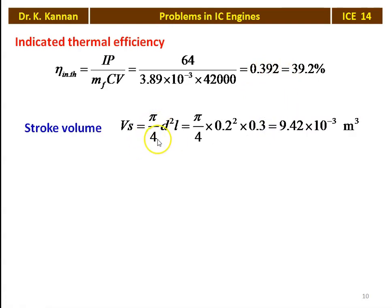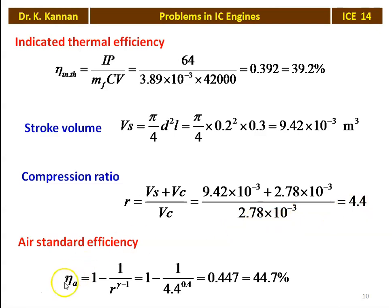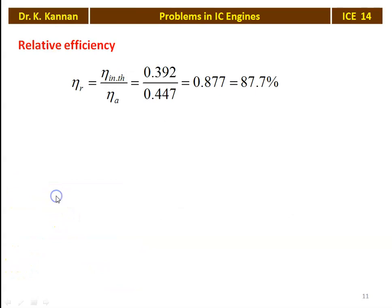Stroke volume Vs = π/4 × d² × L = π/4 × 0.2² × 0.3 = 9.42 × 10⁻³ m³. Compression ratio R = (Vs + Vc) / Vc = (9.42 × 10⁻³ + 2.78 × 10⁻³) / (2.78 × 10⁻³) = 4.4. Air standard efficiency (Otto cycle) = 1 − 1/R^(γ−1) = 1 − 1/(4.4^0.4) = 0.447 = 44.7%. Relative efficiency = 0.392 / 0.447 = 0.877 = 87.7%.